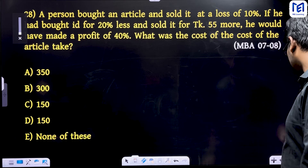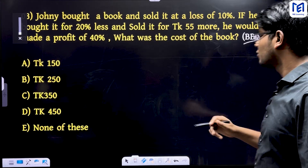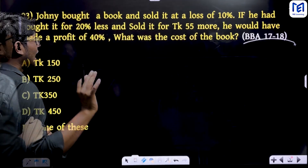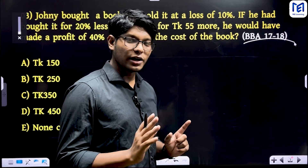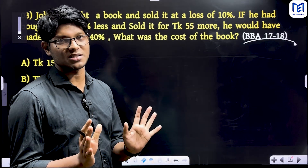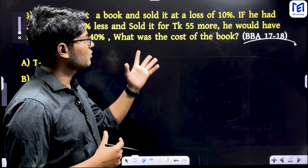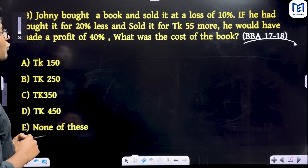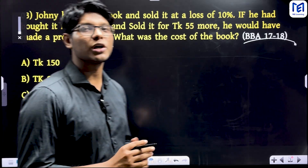This is a similar type of math. The MBAT cost is 7,000, and it was sold for 55 more. You can apply the same method here. This math made a profit of 40 percent. What was the cost?